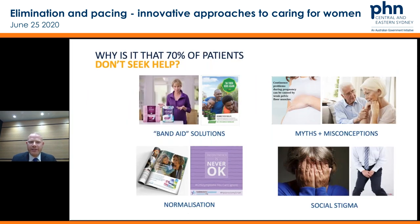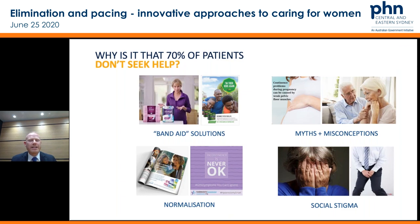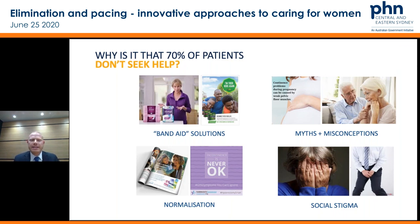Why do 70% of patients not seek help? One of the big problems is there's a big pressure for band-aid solutions — just putting up with it or wearing pads. There are a lot of myths and misconceptions in the community: for example, some advocate that as you get older it's just part and parcel of getting older. I think we need to change that mindset because there are so many treatment options. A lot of magazines try to normalise it, which is good in terms of getting rid of stigma, but the more it's normalised, the more people just put up with incontinence.